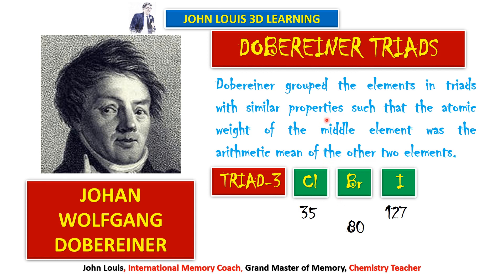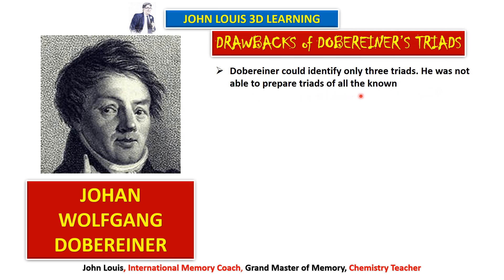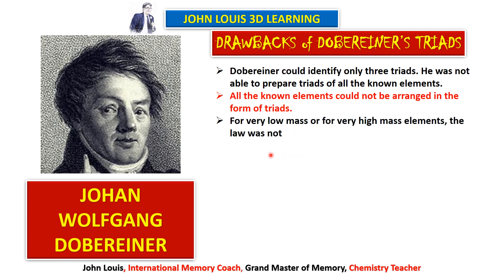The demerits of Dobereiner's triads: he could identify only three triads, and was not able to prepare triads of all the known elements. Around 30 elements were known but he was able to form triads only for 9 elements. All known elements could not be arranged in the form of triads. Also, for very low mass or very high mass elements, the law did not hold good.